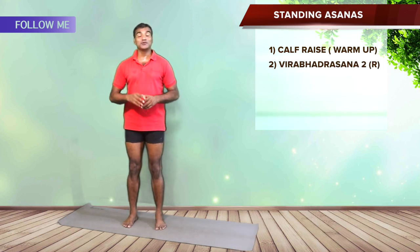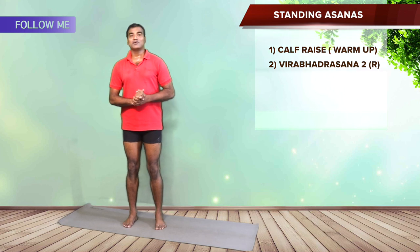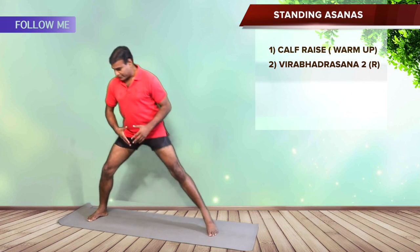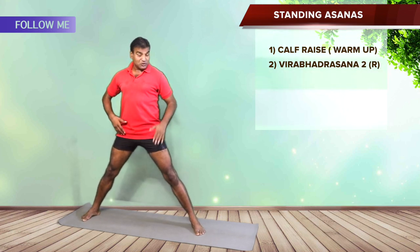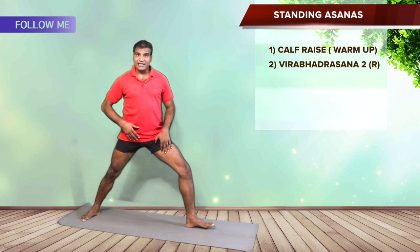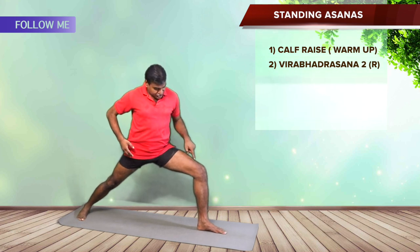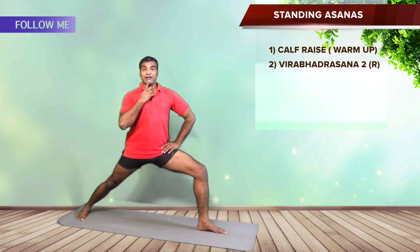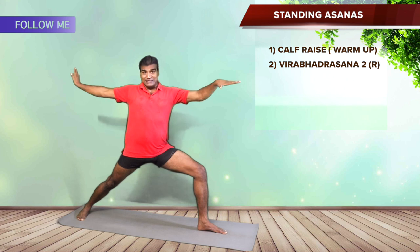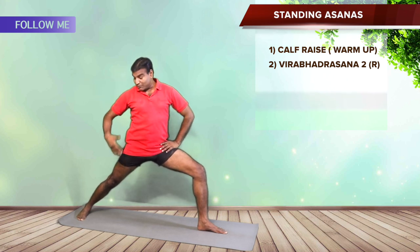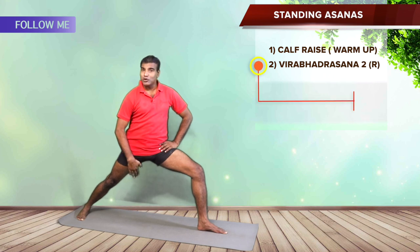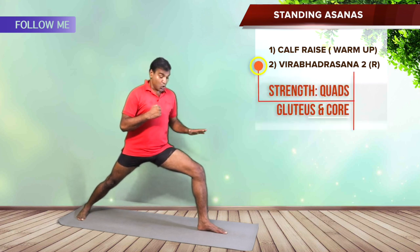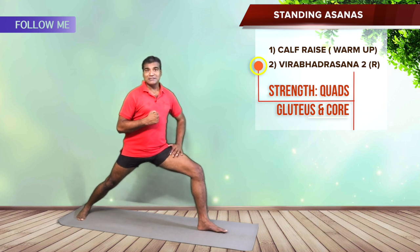Now we are focusing on Veerabhadrasana 2 (Warrior 2) but only on the right side. Take the legs wide apart to a comfortable width. Keep the right leg back, take the left leg out in external rotation so the knee and ankle are on one line. Keep the abdomen engaged, stand tall with a chin tuck. The focus is to stretch the tight adductors while simultaneously strengthening the quads and gluteus medius. Feel the nice stretch on the adductors, and check that the knee and ankle stay on one line. Breathe in and breathe out, keep the core engaged.